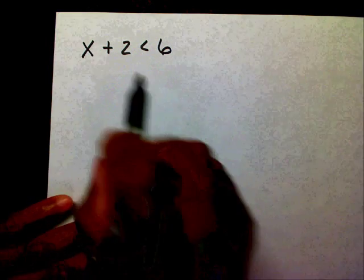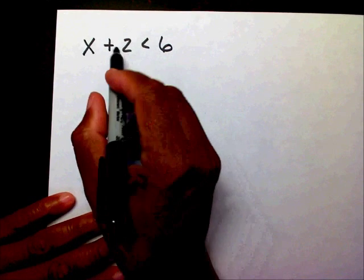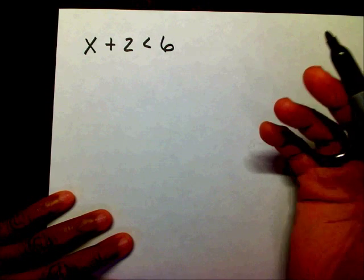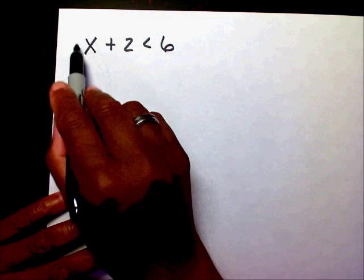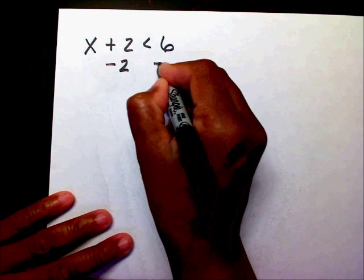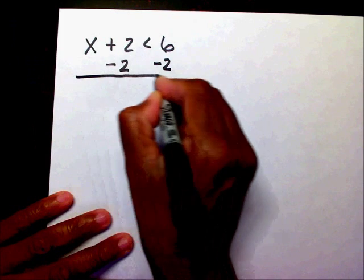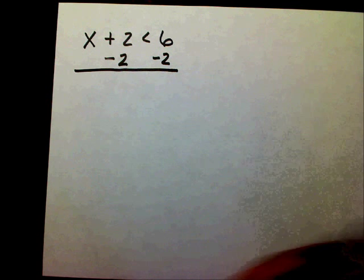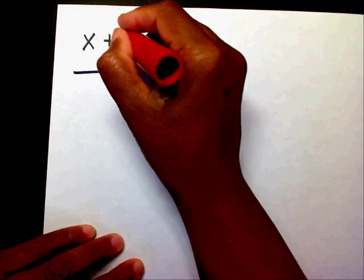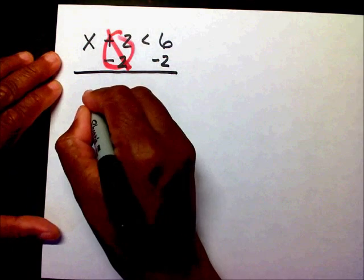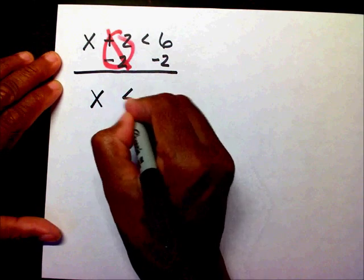We have x plus 2 is less than 6. Just like with an equation, I want to isolate my x. On the x side, I have a plus 2, so I'm going to subtract 2 on both sides — whatever you do on the left hand side, you have to do on the right hand side. The 2's cancel each other out, leaving me with x is less than 4.